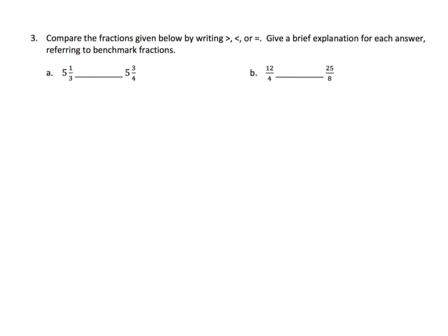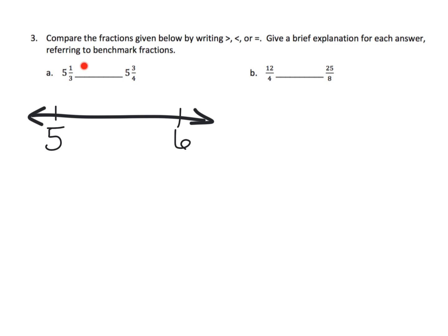Here it says to compare the fractions, and notice we don't have to draw a number line — we can use logic. Both numbers have a whole number of five, so they're both between five and six. All we have to do is compare the fractions: one-third is less than a half, and three-fourths is greater than a half, so five and three-fourths is greater.